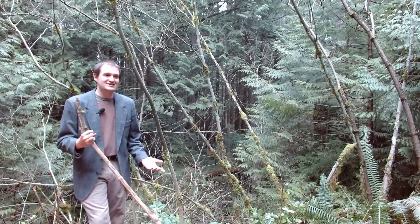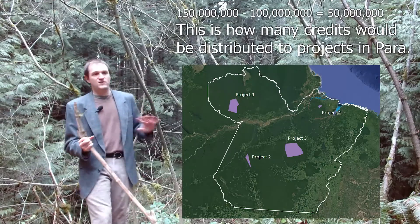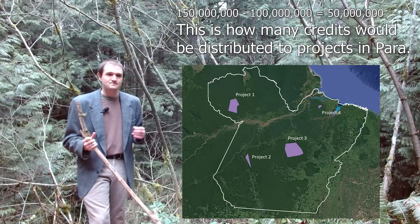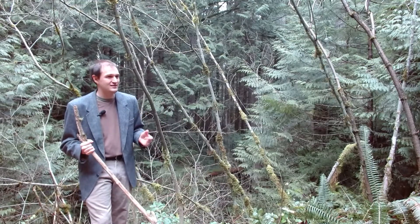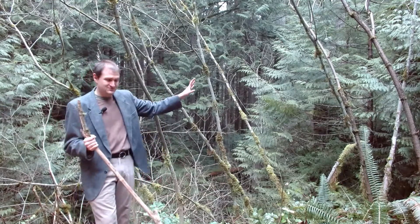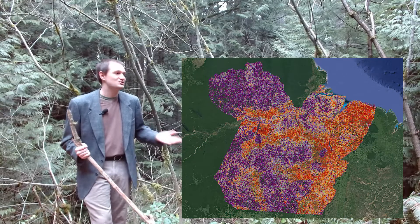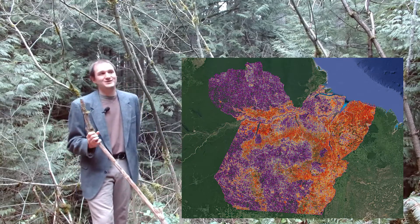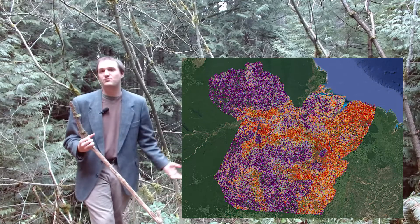Another problem with nested baselines is that there needs to be some means of actually awarding the credits. Maybe 50 million credits are being awarded to all the projects in the state of Pará in Brazil — great. How do we actually decide which projects get more credits and which get less? The only way to make that decision is to do some sort of risk map to say that this project was at greater risk than that project. Guess what you've just done? You've created a baseline — the same type of baseline that Verra has been creating this entire time. So you've basically just taken the credits and once again incentivized the project developers to come up with creative ways of creating risk maps.